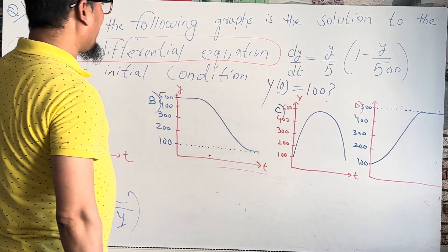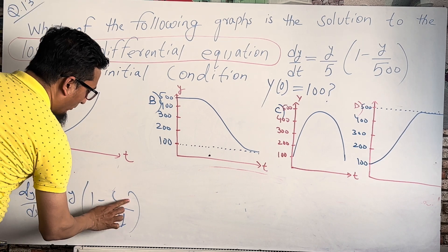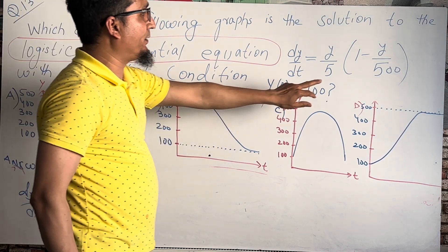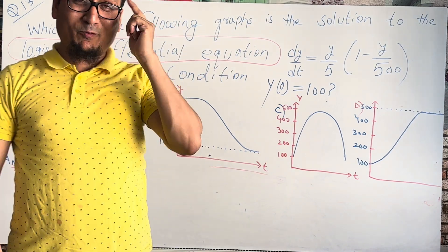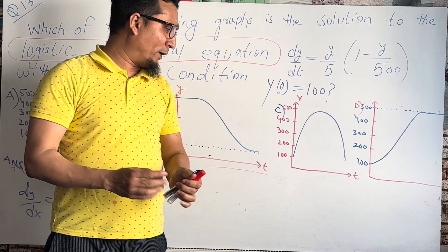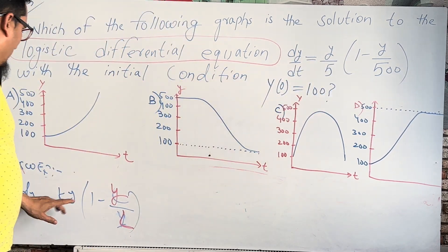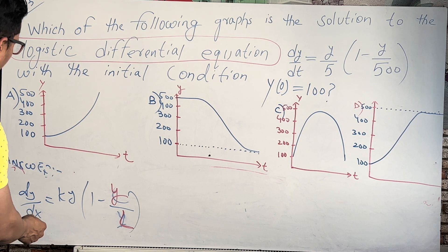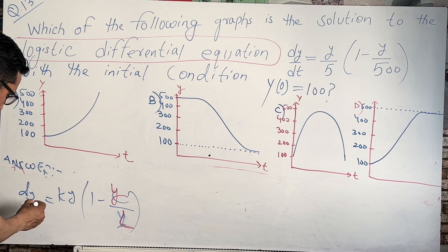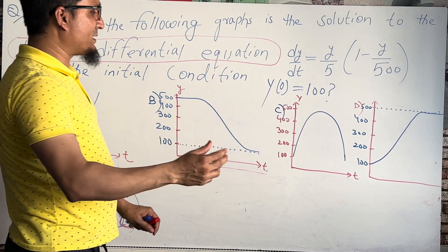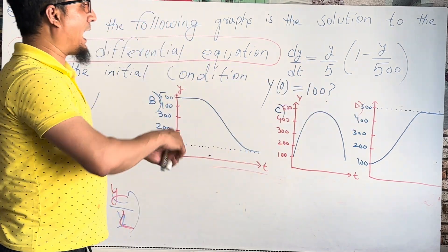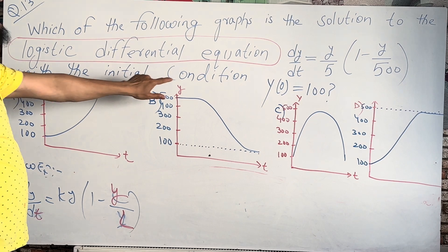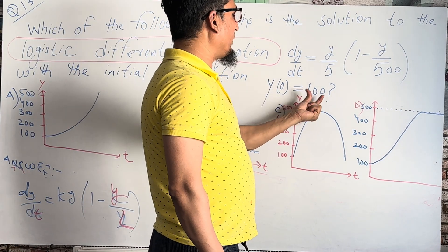So the maximum value L is 500. As t increases on the x-axis, the function reaches a maximum of 500 and then becomes constant — a straight horizontal line with no further increase. The initial condition is also given: when t = 0, the initial value y = 100.